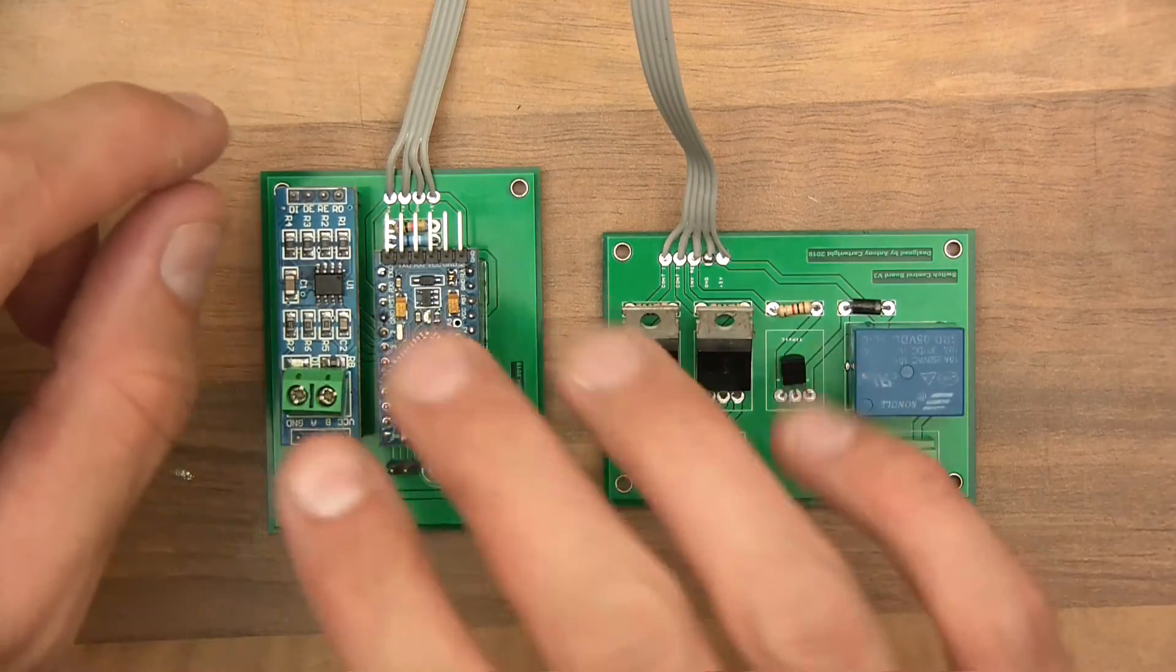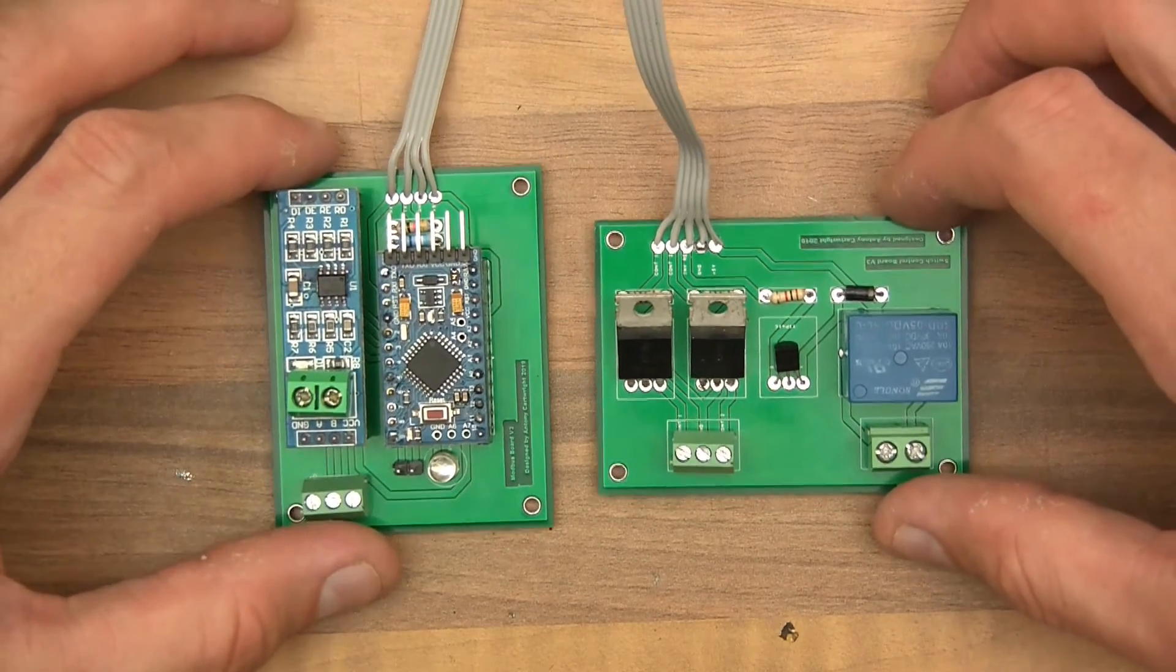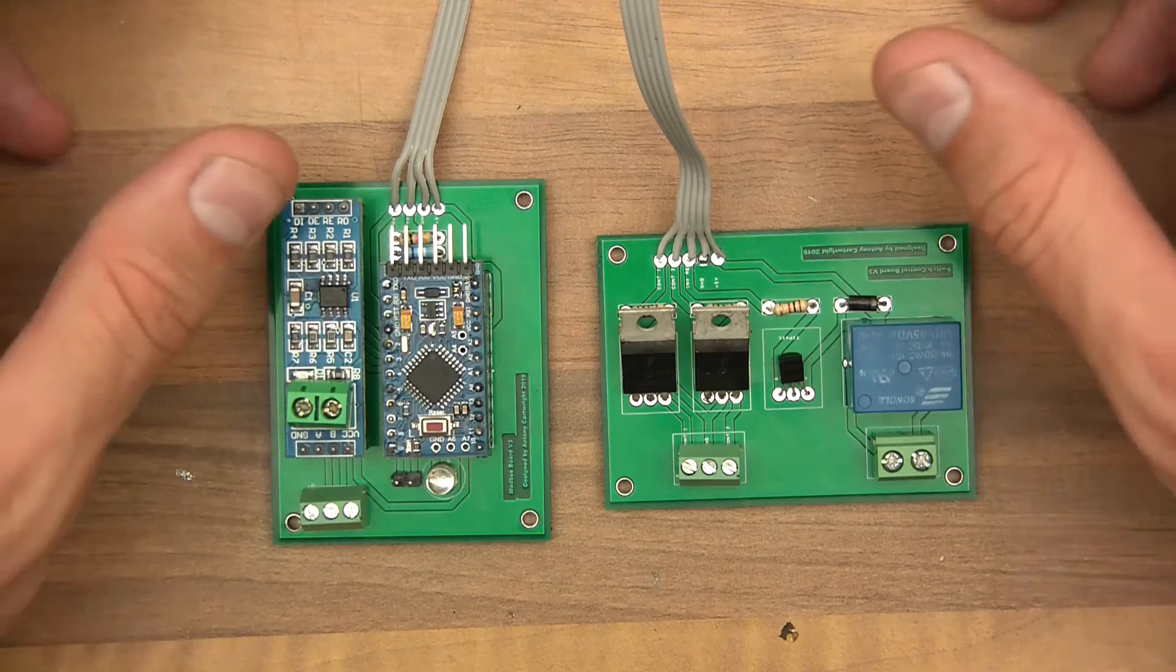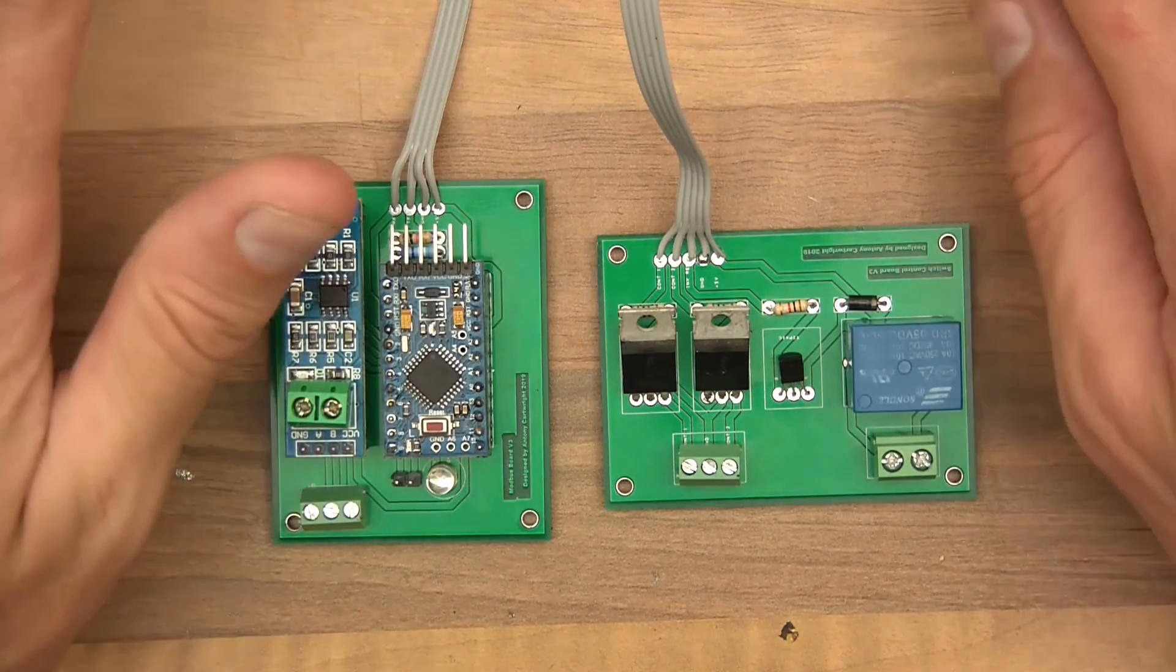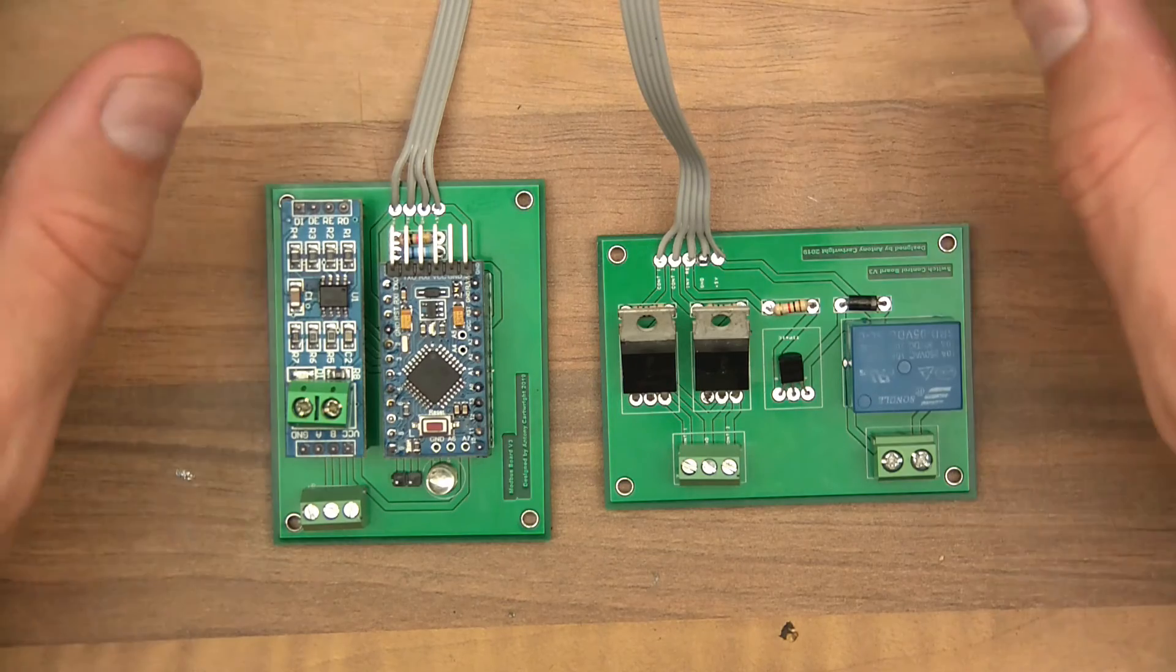So now we've got two boards. That's the Modbus board, that's the relay board. The next board that I show you will be the master control board, which has got all of the, well, what can I say? It's got the ESP32 on it, a load of resistors,